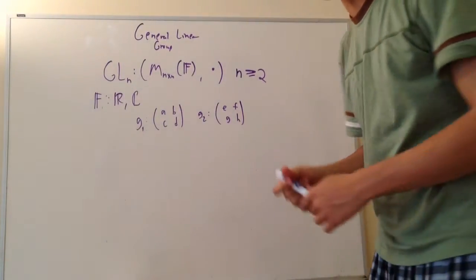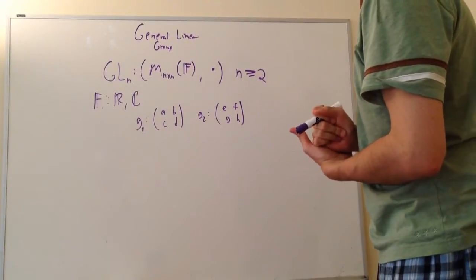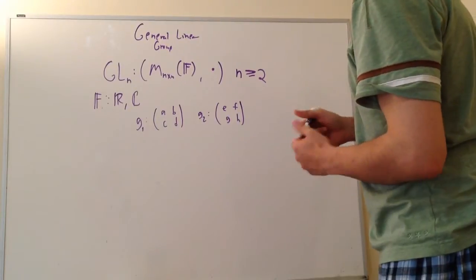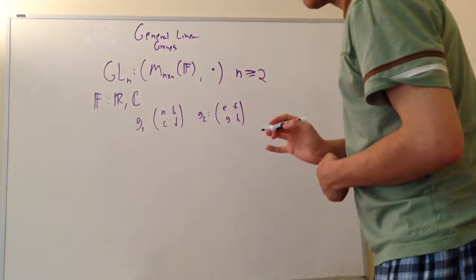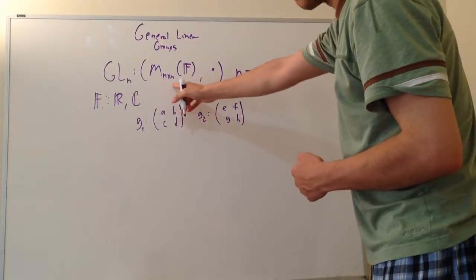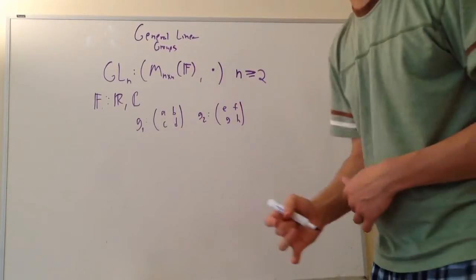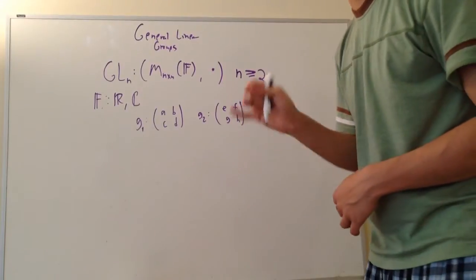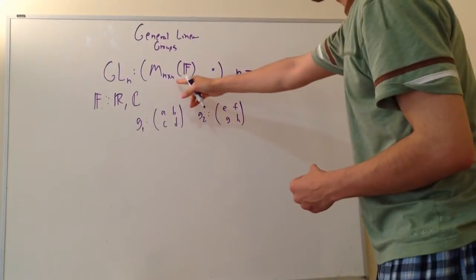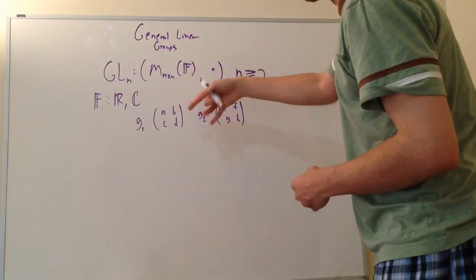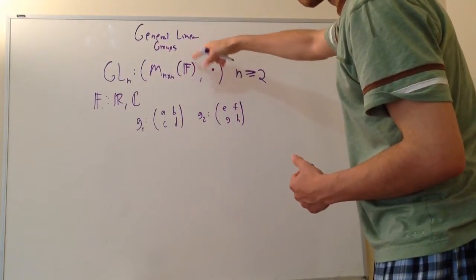Alright guys, so this is my fourth video on my abstract algebra playlist, and today I'm going to be talking about general linear groups — what they are and really just the definition of them. A general linear group is defined as the set of all n-by-n invertible matrices. The keyword invertible is very important. If they're not invertible, they do not form a group. So the set of all n-by-n invertible matrices, which are square, of course, whose elements come from a field.